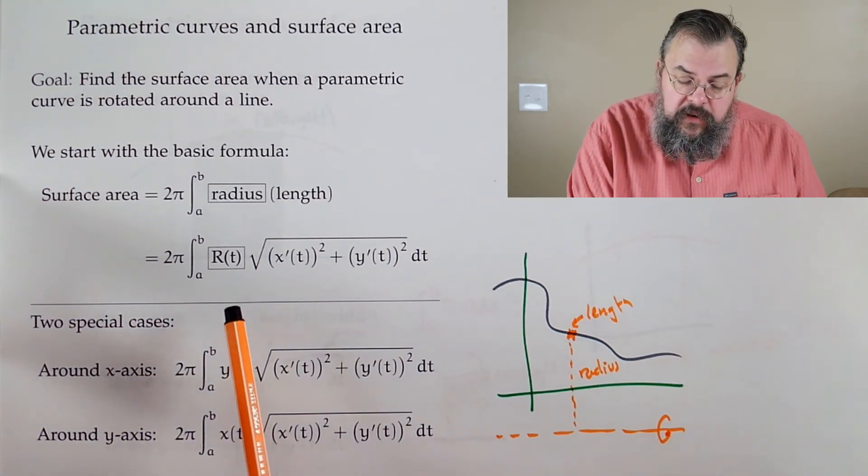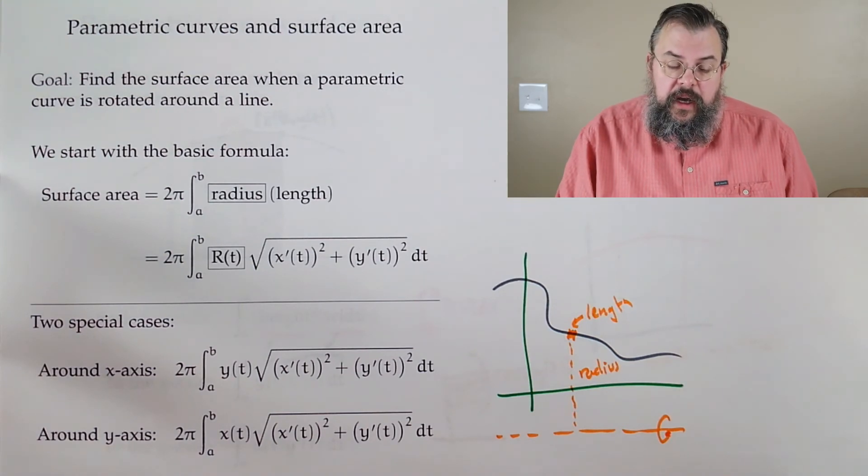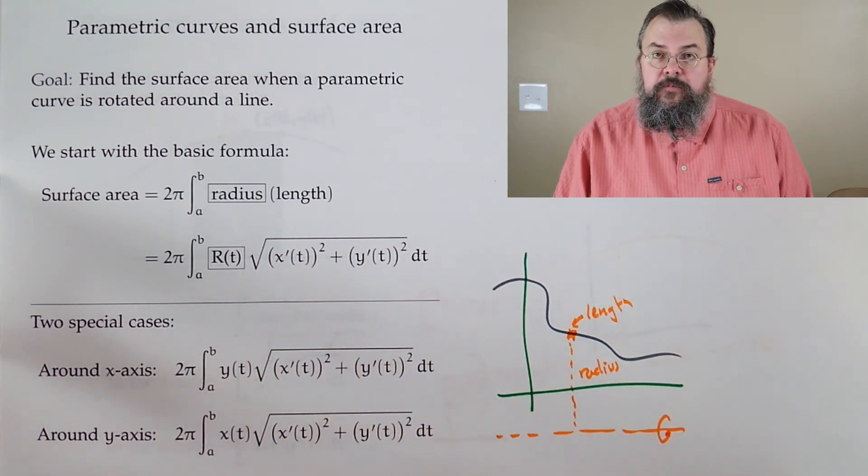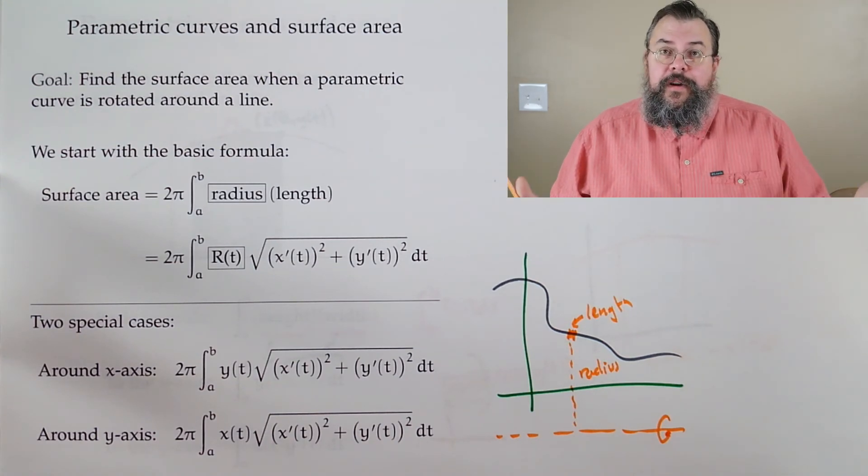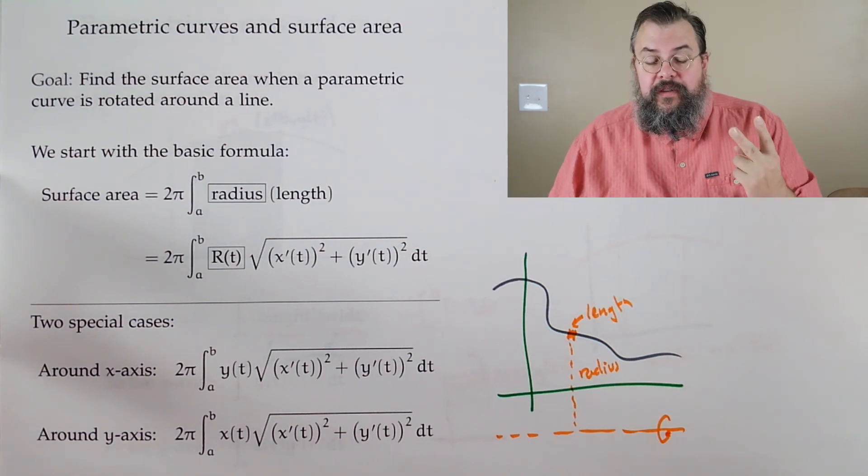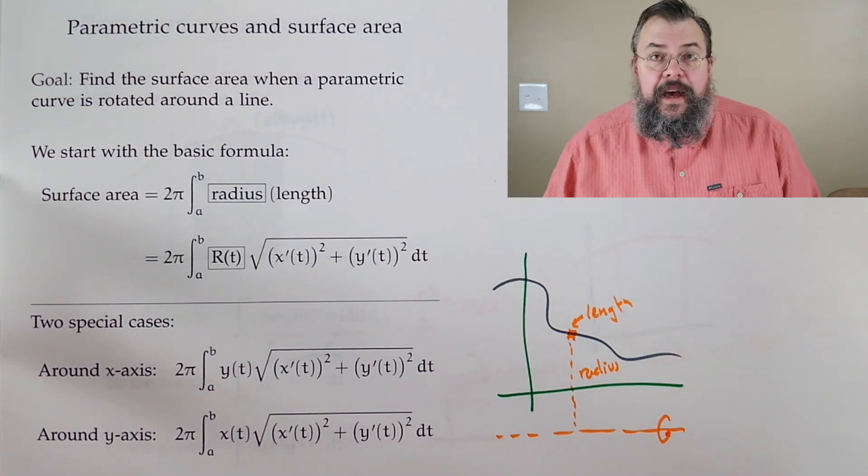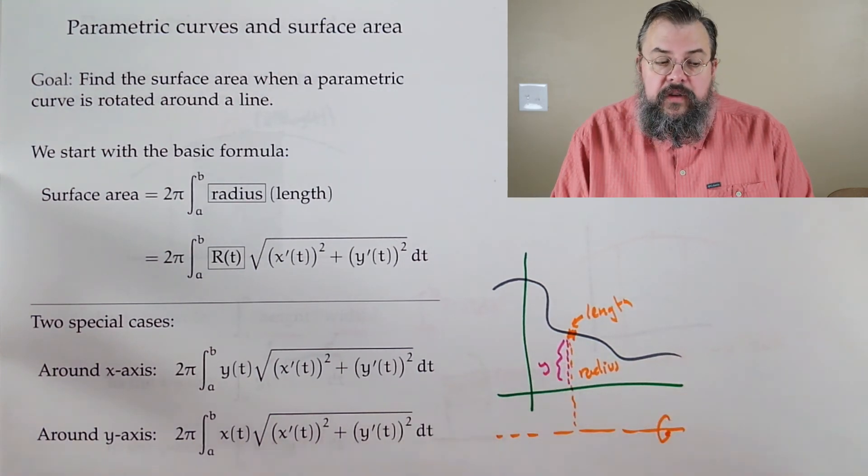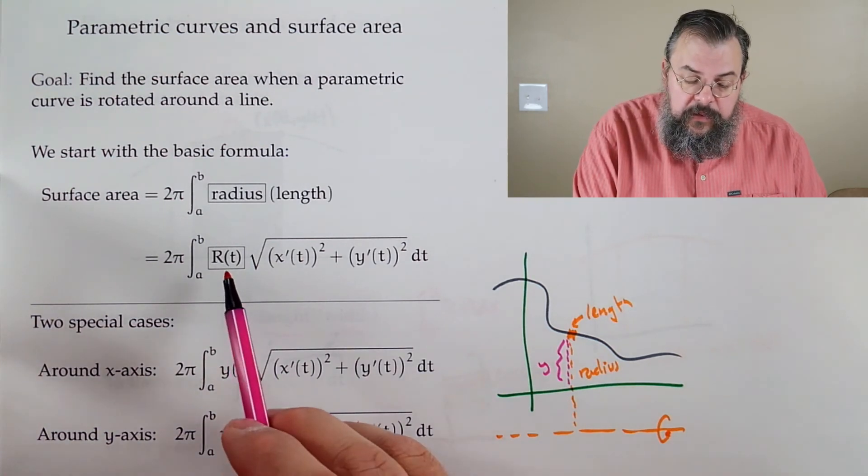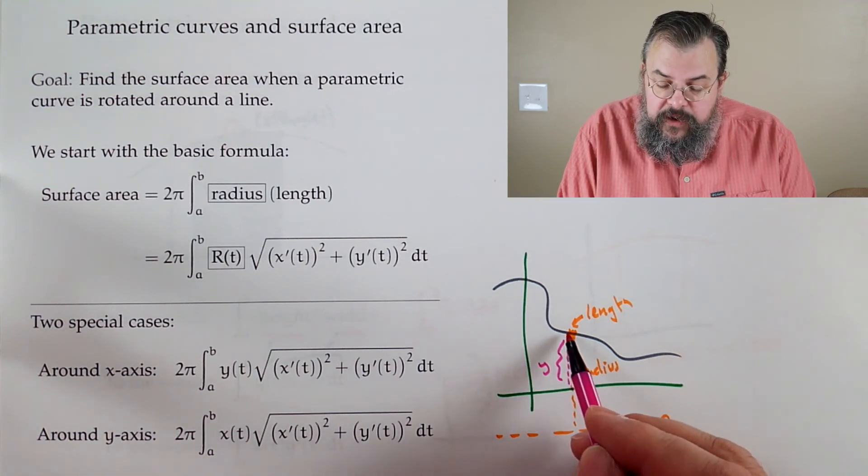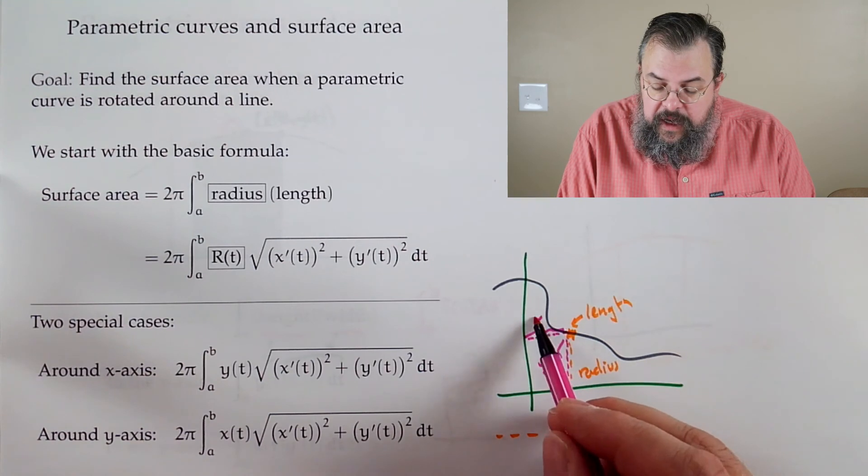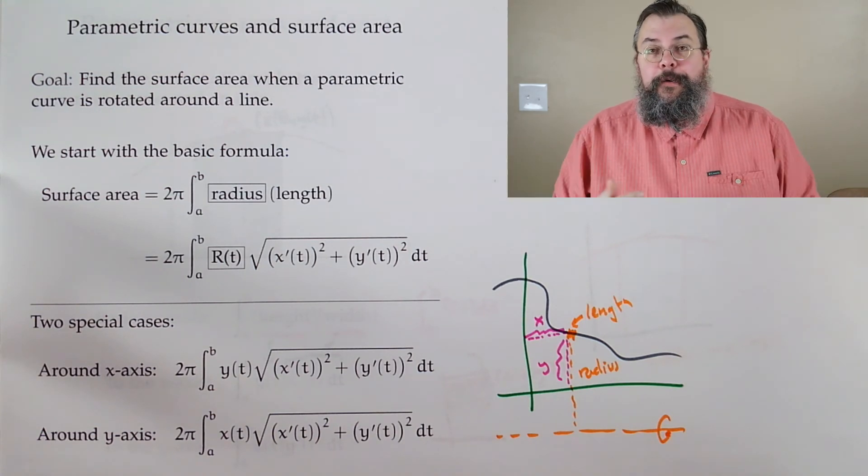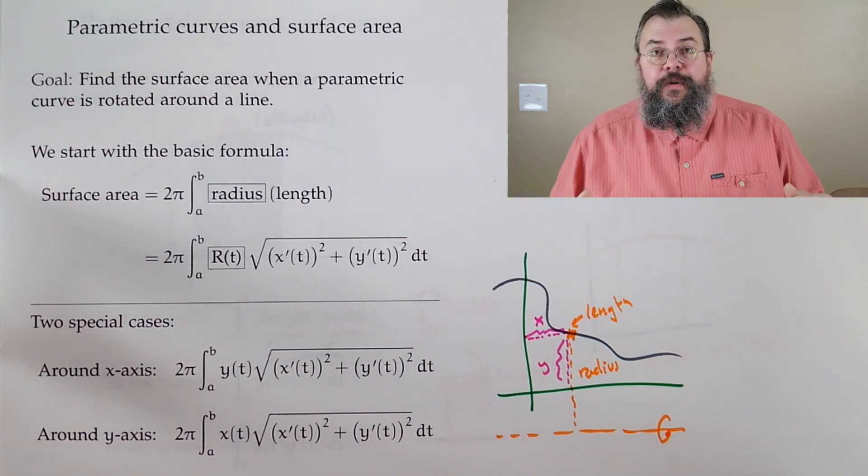Our radius is some function of time. No problem. We just figure it out. And our length, that's like our arc length. And we just talked about that. X prime squared plus Y prime squared, square root of that, DT. And we're basically done. We're ready to go. Now what's the radius? It depends where we spin. There's two special cases. Suppose we wanted to do it around the X axis. If we want to go to the X axis, our distance here is Y. Y tells us how far we are from the X axis. So our radius function is Y of T. If we want to go to the Y axis, our distance there is X. So our distance is X of T, and so forth and so on. It's just a matter of saying how far am I from where I'm spinning. And once we have that, life is good. We can do all sorts of fun stuff.